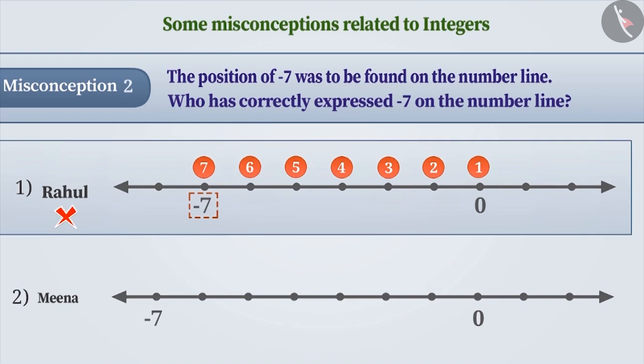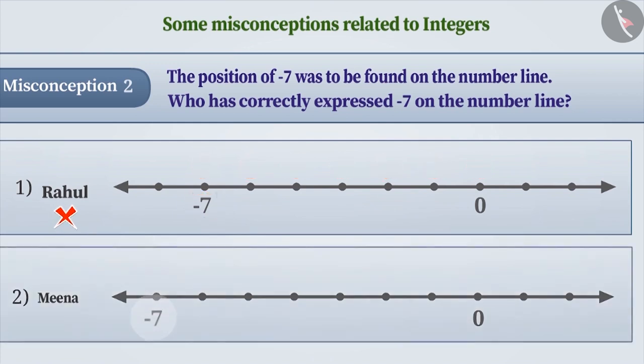That is, Rahul is wrong. To express minus 7, it is correct to leave the point for 0 and count from the point after it. That is, Meena has given the correct answer, which is option 2.